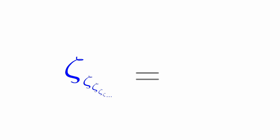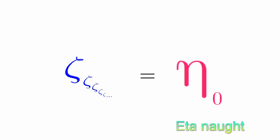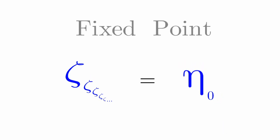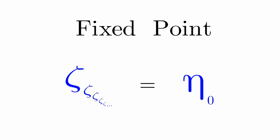We can keep nesting zetas like this. An infinite nesting of zetas is called eta naught. This is the fixed point of zeta.